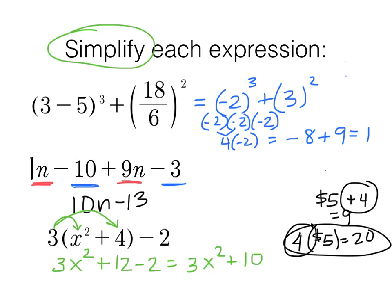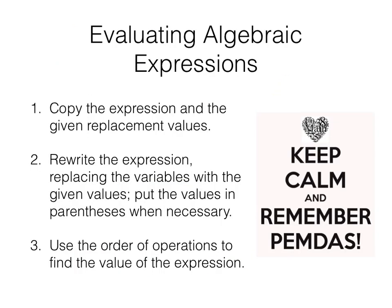All right, moving on to evaluating algebraic expressions. So you're going to copy the expression and the replacement values, the given replacement values. What x and a and whatever, whatever the letters are, whatever they're equal to. That's the given replacement values. You're going to rewrite the expression, replacing the variables with the given values. You're going to put the values in parentheses when necessary. We'll look at when and where that's going to be necessary. Use the order of operations to find the value of the expression.